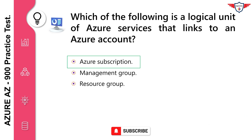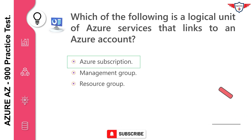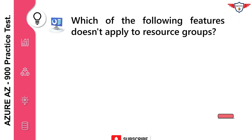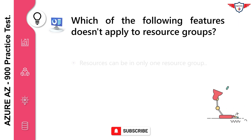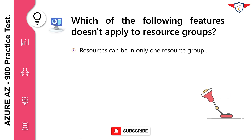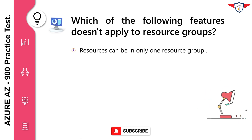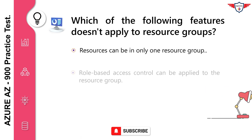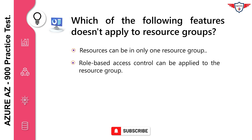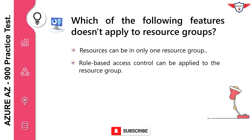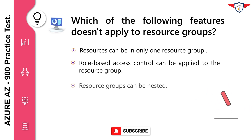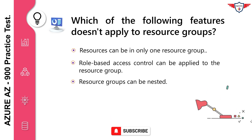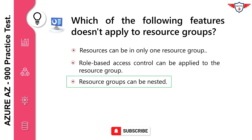Which of the following features doesn't apply to resource groups? Resources can be in only one resource group. Role-based access control can be applied to the resource group. Resource groups can be nested. The correct answer is resource groups can't be nested.